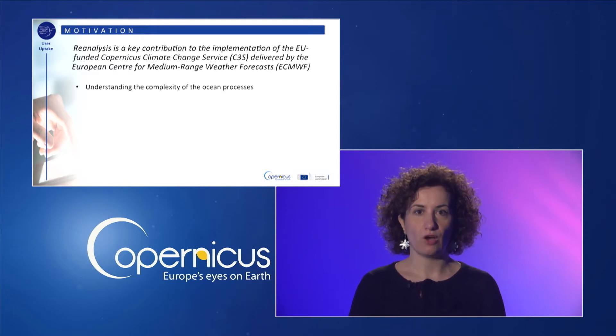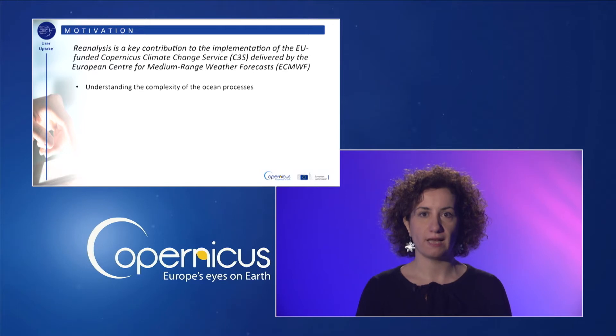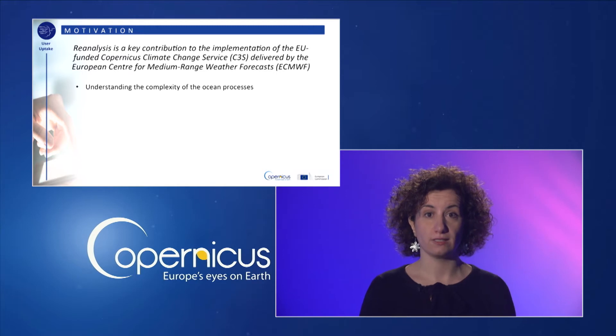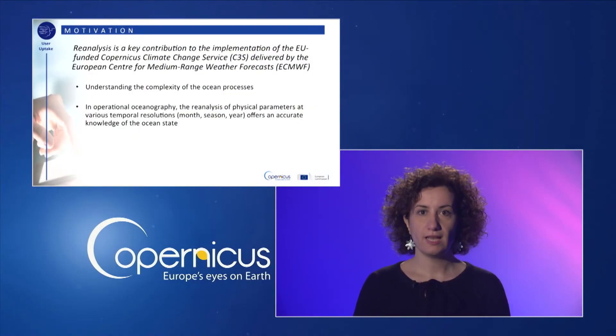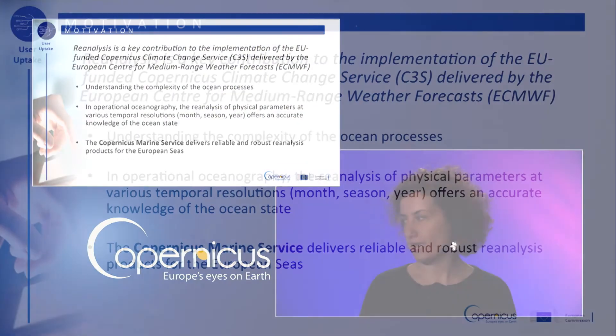Understanding the complexity of the ocean processes to predict changes and climate extremes from the global to regional to coastal scales, and to forecast sea conditions' evolution in time, requires advanced numerical ocean modelling for reconstructing the past and present climate. In operational oceanography, the reanalysis of physical parameters at various temporal resolutions offers accurate knowledge of the ocean state for predicting climate anomalies and defining climate change indicators, such as sea level, ocean acidification, and ice.